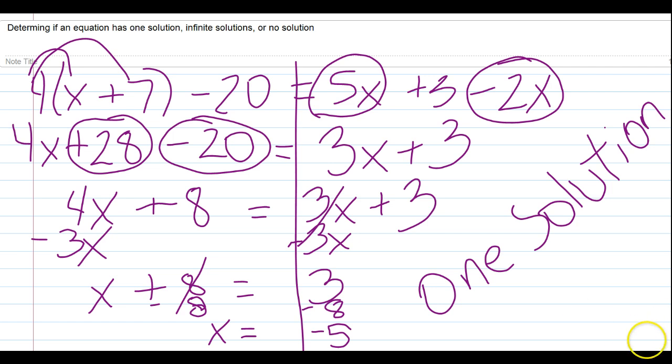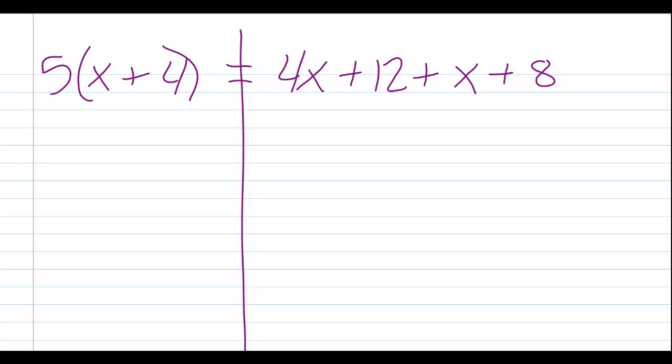So, now let's look at another example. Let's do 5 times x plus 4 equal to 4x plus 12 plus x plus 8. Let's split our two sides here. On the left, we need to do distributions. We're going to distribute that 5 into the parentheses. So, we're going to do 5 times x, which is 5x. 5 times 4, which is 20. So, 5x plus 20.